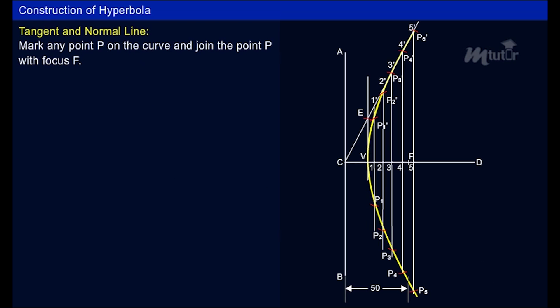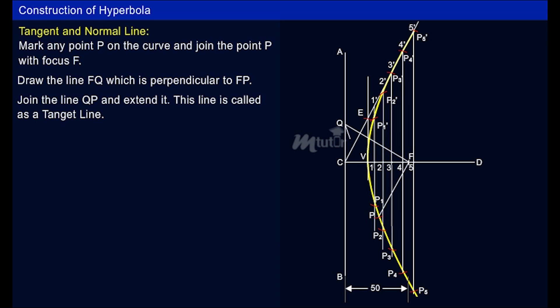To draw the tangent and normal line, mark any point P on the curve and join the point P with focus F. Draw the line FQ which is perpendicular to FP. Join the line QP and extend it. This line is called a tangent line.